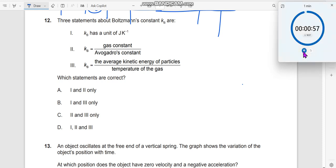Question number 12. Three statements about Boltzmann's constant are: kb has a unit. What is kb? Boltzmann constant. kb is nothing but the gas constant divided by Avogadro's number, Na.